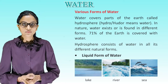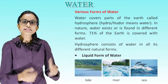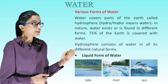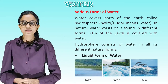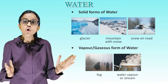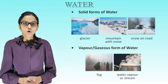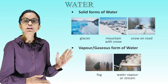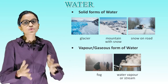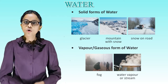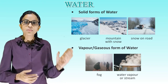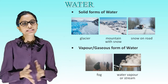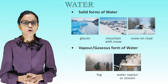Liquid forms of water. Are you able to see these 3 pictures? These 3 pictures are depicting the liquid form of water: lake, river and sea. Now, solid forms of water. What is a solid form of water? When we find water in the form of a glacier, mountains with snow, or snow on a road — that is a solid form of water. Now, vapor and gaseous form of water. Water vapor or steam is a gaseous form of water.